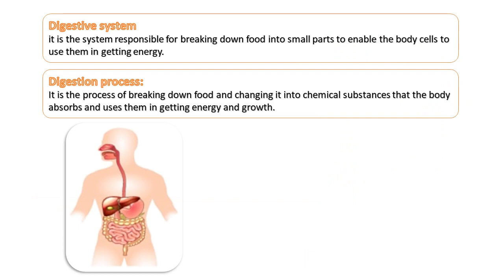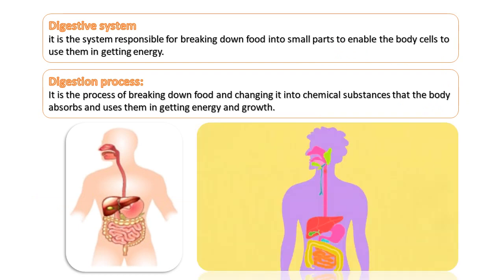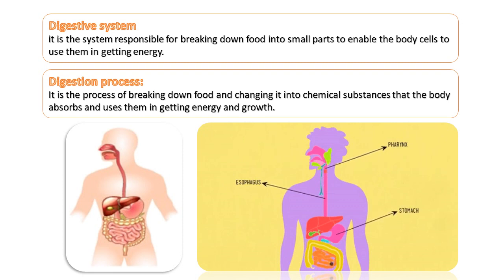Starting with the digestive system — it is the system responsible for breaking down food into small parts to enable the body cells to use them in getting energy, and we call this the digestion process. It is the process of breaking down food and changing it into chemical substances that the body absorbs and uses in getting energy and growth.